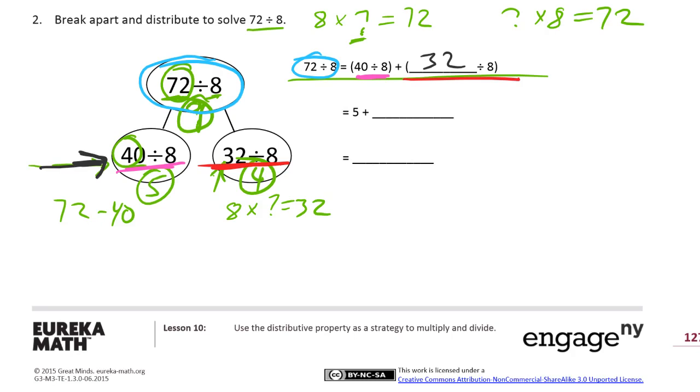So we know that the 40 divided by 8, we know that's 5. That's why we chose it. And the 32 divided by 8, we figured out that one is 4. So we have, there's the 5 plus 4, and that's 9. Just as we had there. I hope that helps.